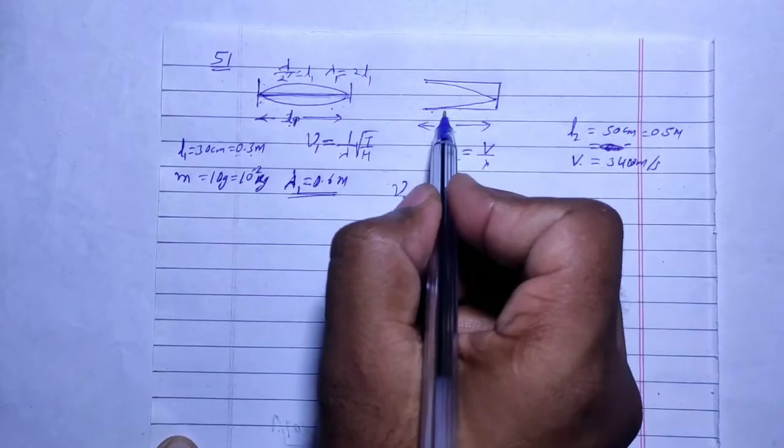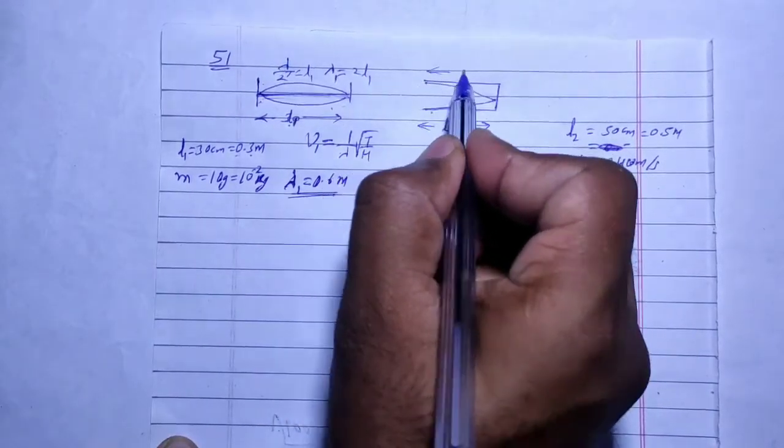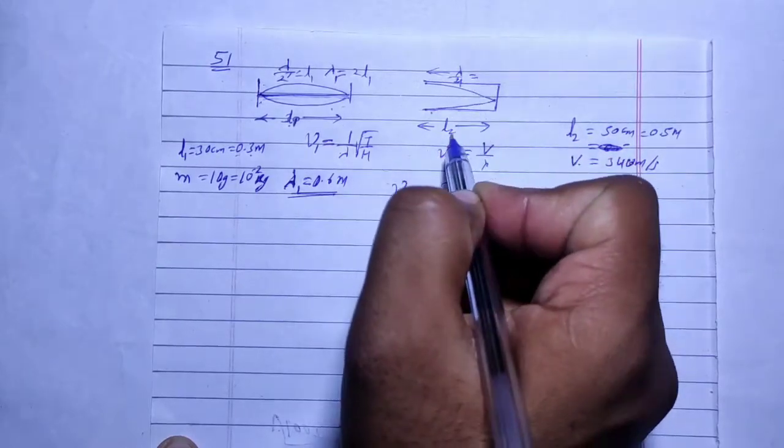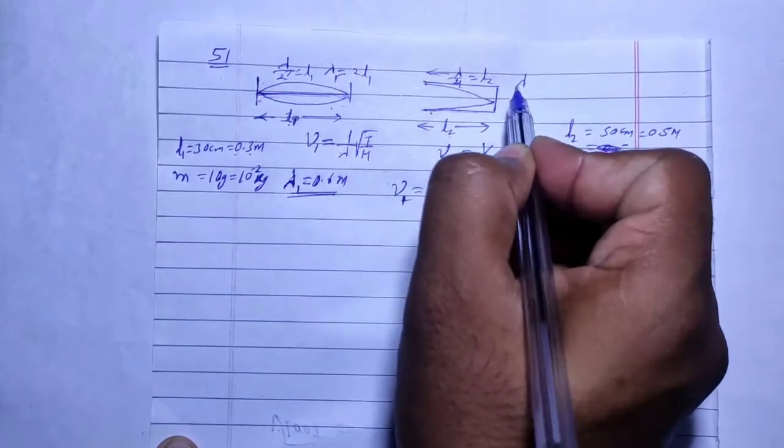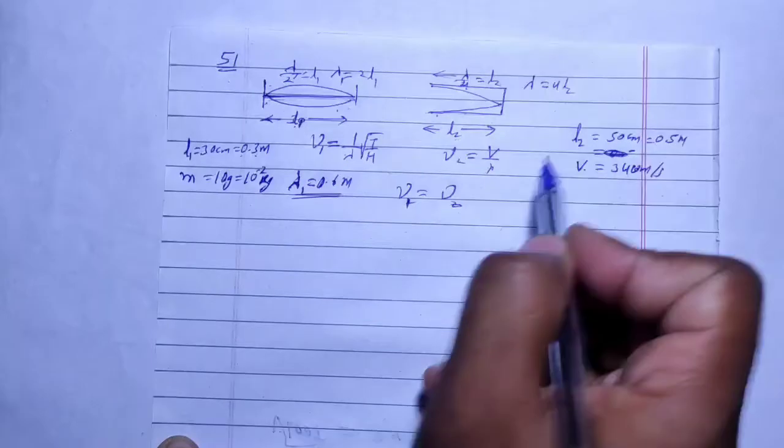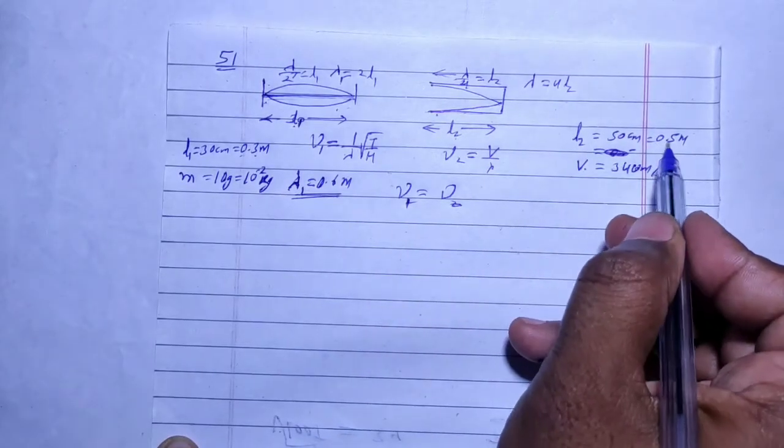Now here, for the closed organ pipe, lambda by 4 equals L2. So lambda equals 4 times L2. L2 is 0.5 meters.